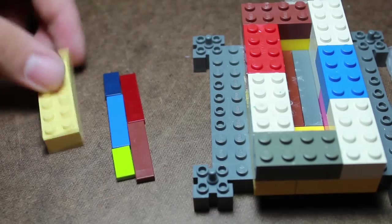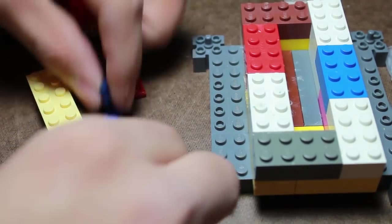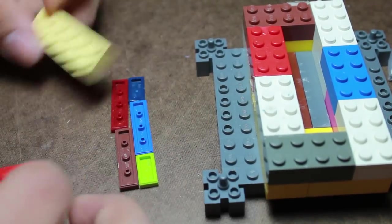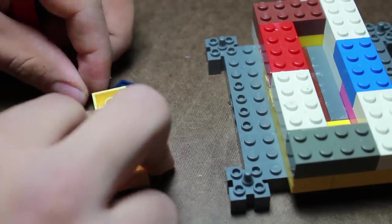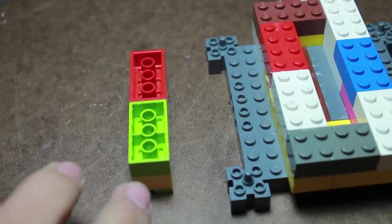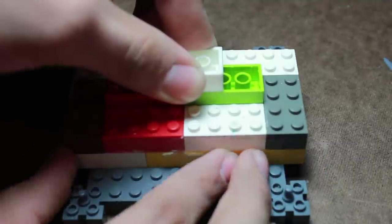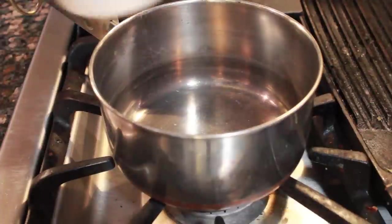And now I'm going to create a push block to help push down the different layers of Oyomaru. So I'm again using some flat blocks and then some bricks. And this is going to be used to press the Oyomaru into the mold.